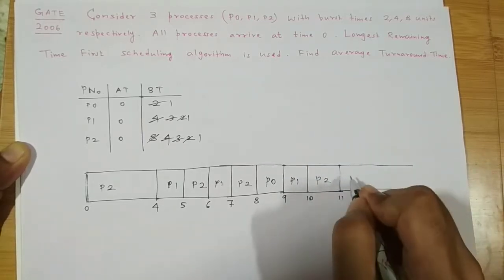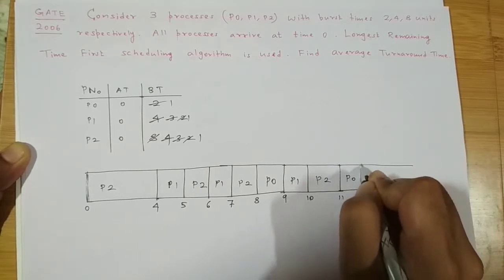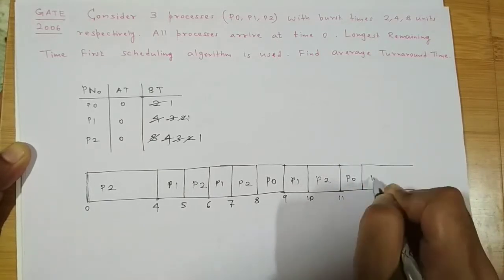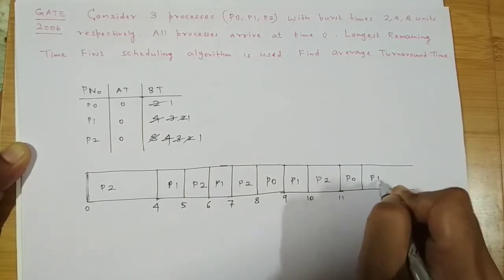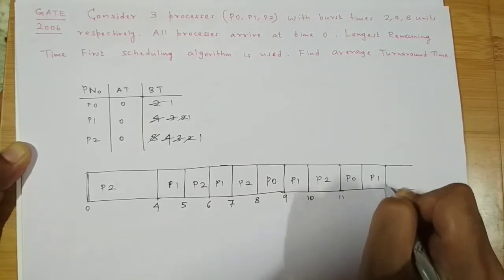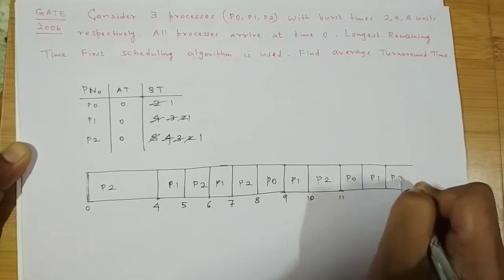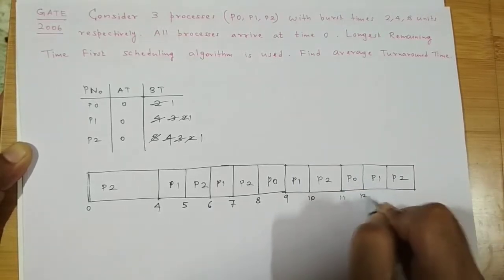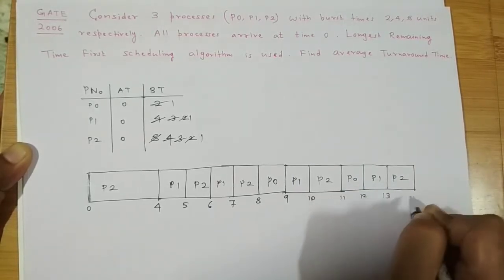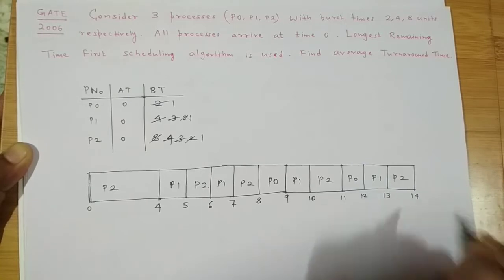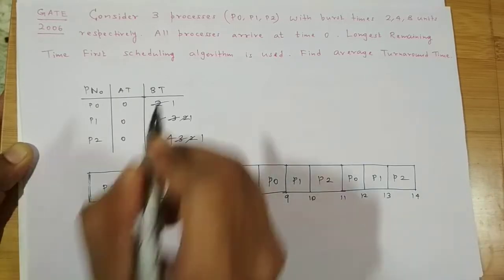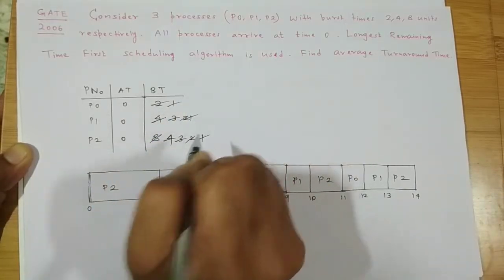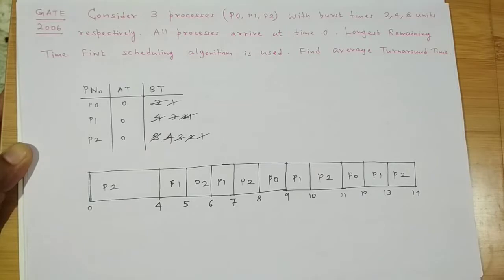The pattern continues: P1 for one unit, P0 for one unit, P1 for another unit, and finally P2 is the last process to execute. That brings an end to the scheduling of all processes.